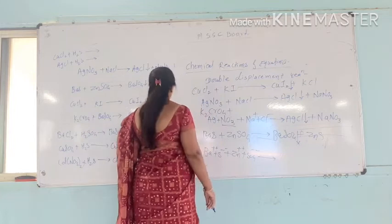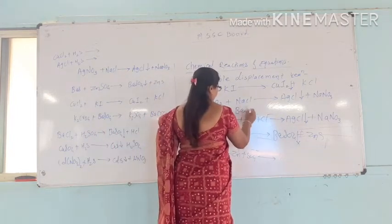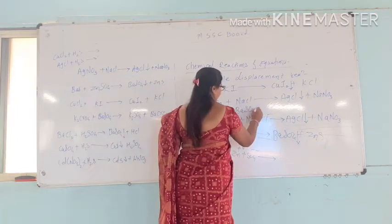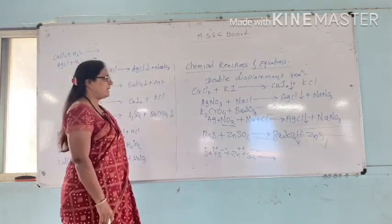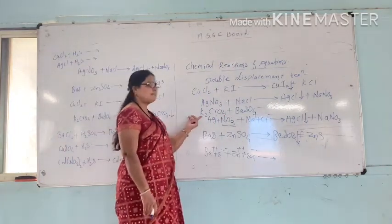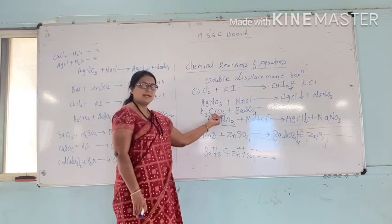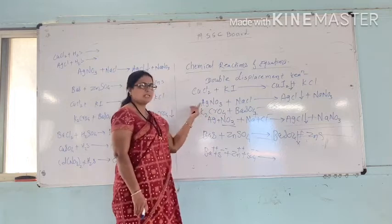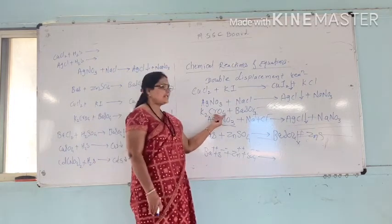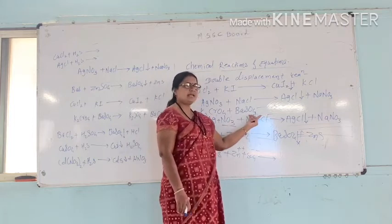Potassium chromate reacts with barium sulfate. Potassium ions are positive and chromate ions are negative. Barium ions are positive and sulfate ions are negative.